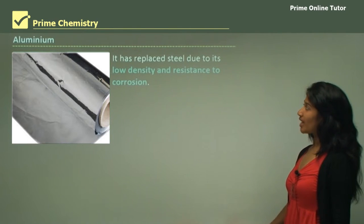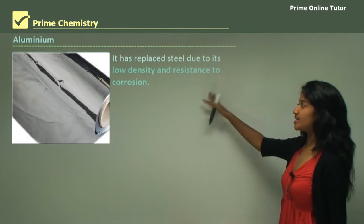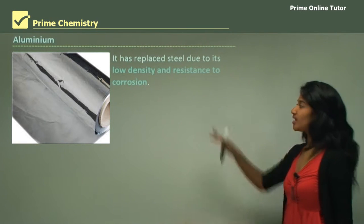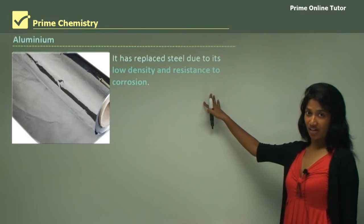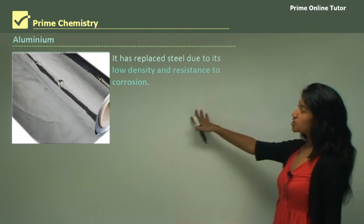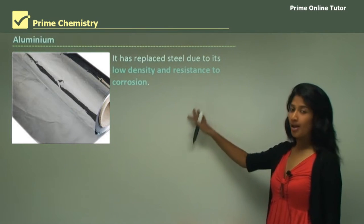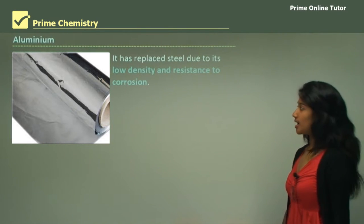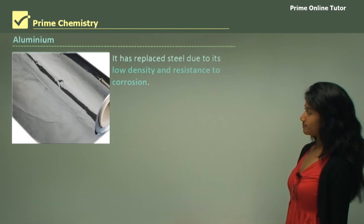It replaced steel due to its low density and resistance to corrosion. Now these are two advantages of aluminium. Its low density and resistance to corrosion makes it a very useful metal in the modern era.